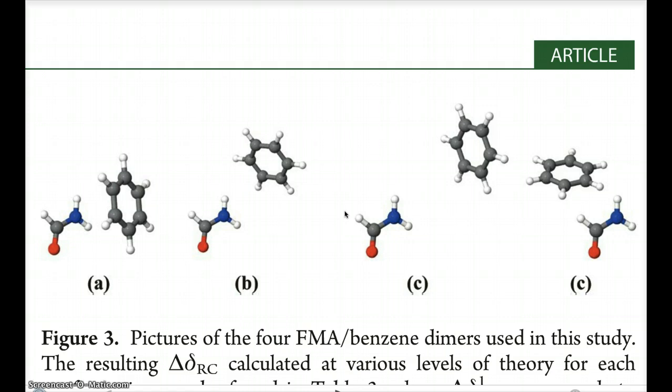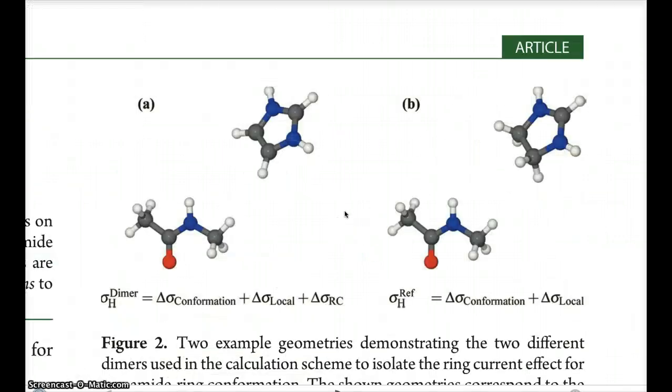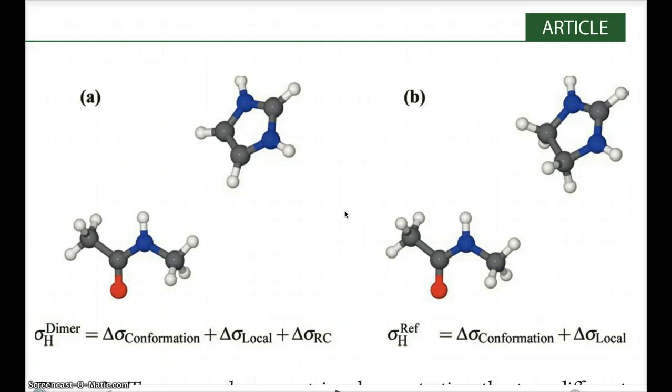And so the way we do that is we construct models like this, and then to get at the ring current effect, here is an example for histidine. We break the aromaticity, so in the case of histidine, this is protonated histidine, we add two protons here to break the double bond and thereby remove the aromaticity. And so the difference in chemical shift of this amide proton in this structure here and in this structure here is the chemical shift ring current effect on the chemical shift. Okay, so that's essentially what we're doing.